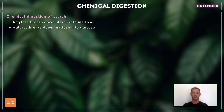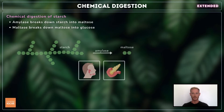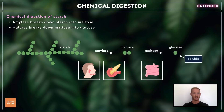The chemical digestion of starch is a two-part process. The first stage occurs in the mouth and duodenum, where salivary and pancreatic amylase break down the long-chain polysaccharide starch into 12-carbon sugar molecules called maltose. The second stage takes place in the ileum, where another enzyme called maltase, present in the epithelial cell membranes of the villi, breaks down maltose into glucose, which is small enough to be absorbed.